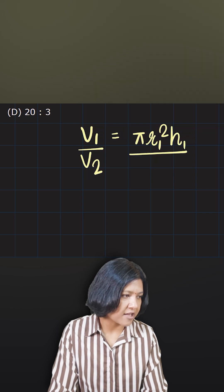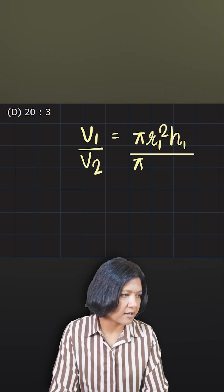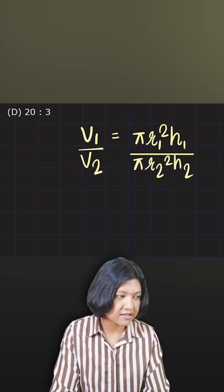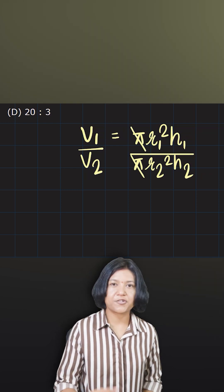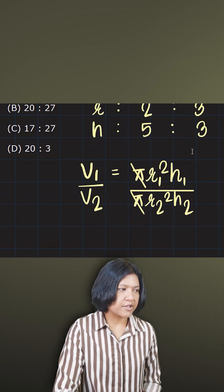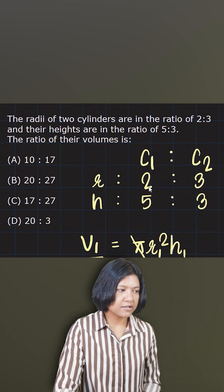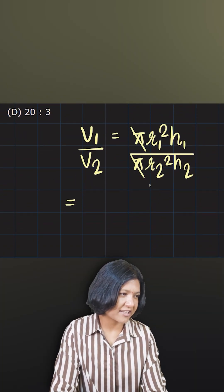This is how I'll find the ratio. To find the ratio, you always get rid of the common part, so get rid of pi. R1 and R2, their ratio we know is 2 is to 3. So I'm going to do something - instead of writing r1 square and r2 square...